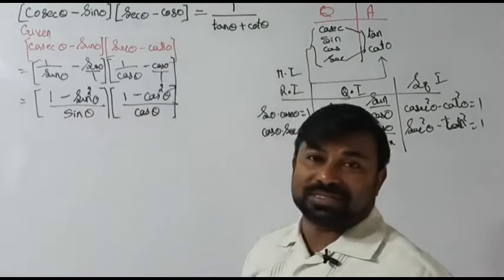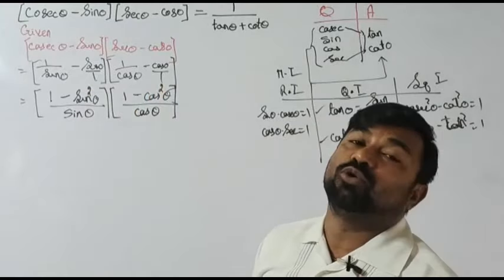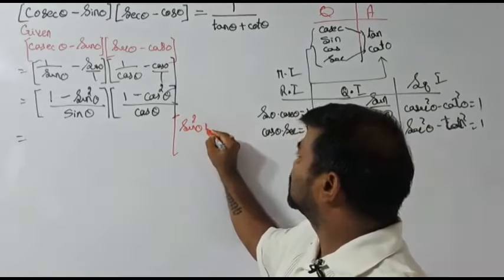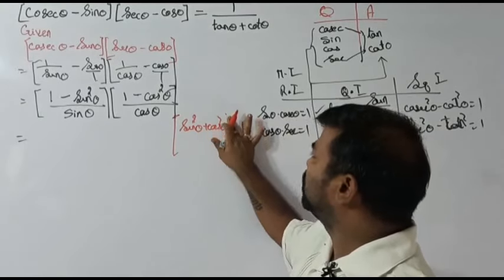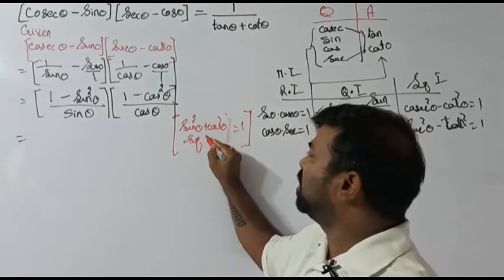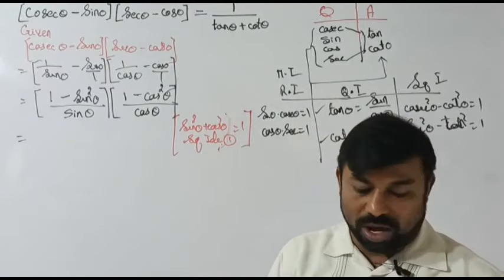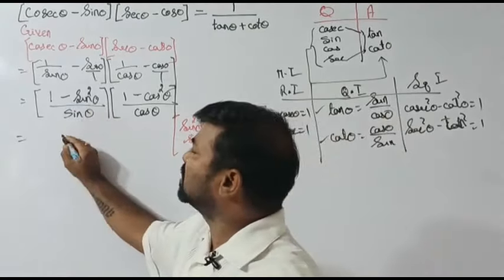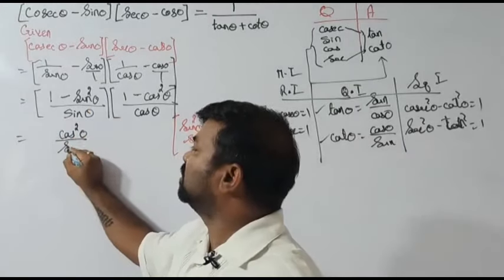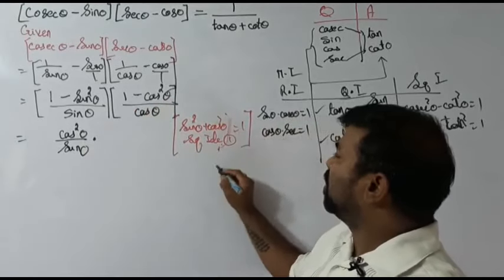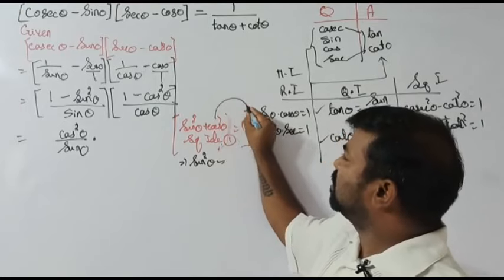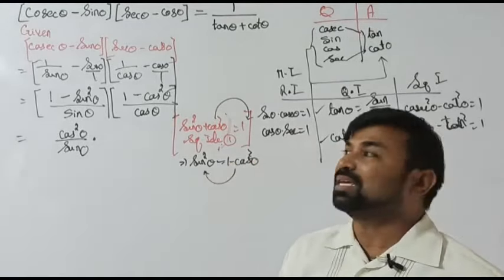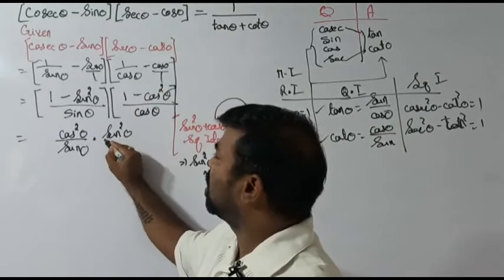We don't have squares in the original question, but now we have sine squared and cos squared. So we apply the square identity: sin²θ plus cos²θ equals 1. From this, 1 minus sin²θ equals cos²θ, and 1 minus cos²θ equals sin²θ. So wherever we find 1 minus cos²θ we write sin²θ, and where we find 1 minus sin²θ we write cos²θ.